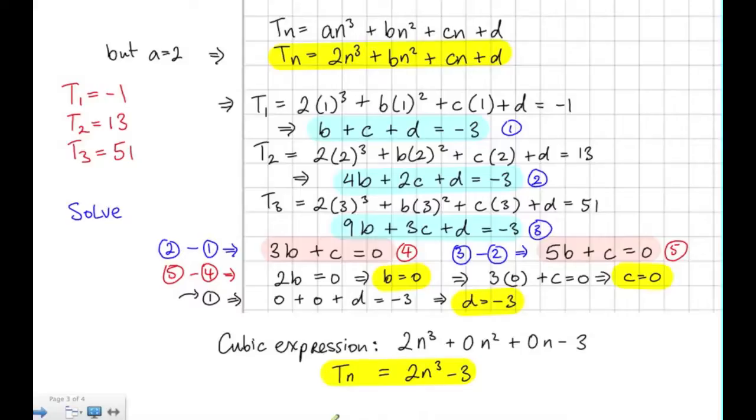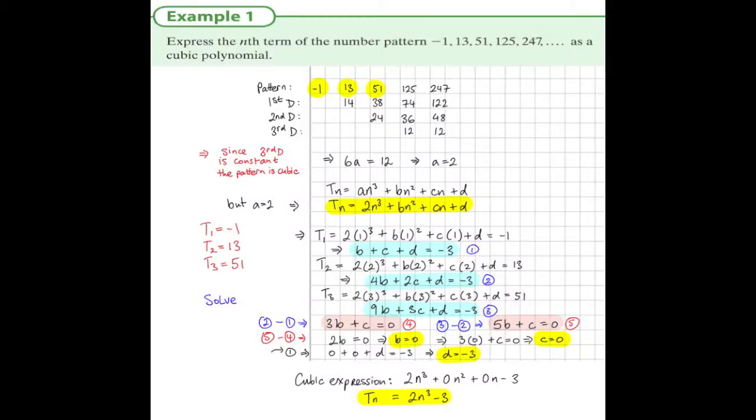So let's just overview this question. To summarize, dealing with these questions, first we write out the first difference, second difference, and third difference until we meet a constant. Then we apply what we know from the table to work out what a is. And then we generate simultaneous equations. And we solve the simultaneous equations working out b, c, and d. And this gives us the general term.